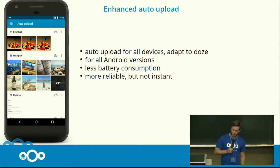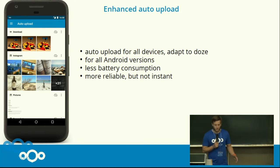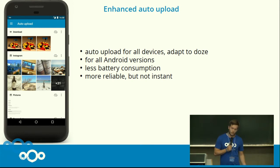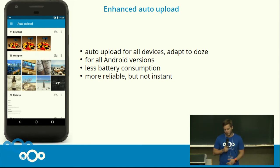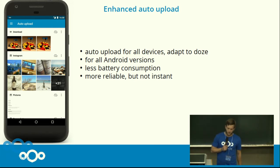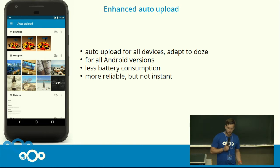He completely rewrote the auto-upload, so it's now possible to use it for all devices. Previously we had a separation between Android 5 and below and Android 6 and above. The old devices still used instant upload, whereas now we can use auto-upload for all versions. We had to make a trade-off between reliability and battery consumption on one side and instant upload on the other, which was also enforced by Android 6, 7, and 8. So it's now more reliable — it should be 100% reliable — but it will never be instant because the Android system decides when the upload takes place.